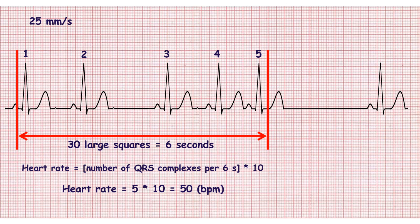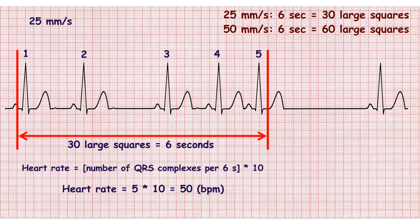The marker method is the best for calculating the heart rate in patients with irregular rhythms. You should count the number of QRS complexes during 6 seconds and multiply it by 10. On ECG recorded with a speed of 25 millimeters per second, 30 large squares correspond to 6 seconds.